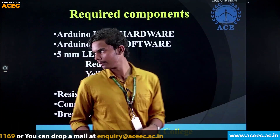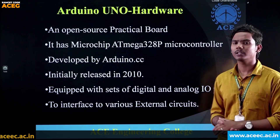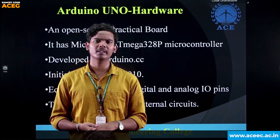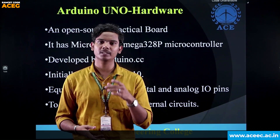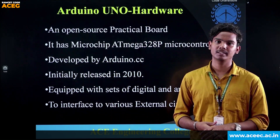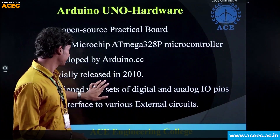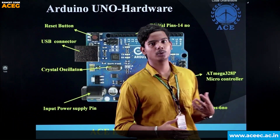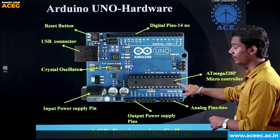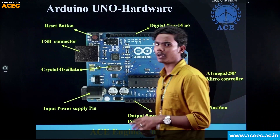Now let's learn about the Arduino Uno hardware. The Arduino Uno hardware is an open-source practical board. It consists of an ATmega328p microcontroller, which is the heart of the Arduino Uno board, released in 2010 by Arduino CC. It also has digital and analog I/O pins. The ATmega328p microcontroller is one of the major components on the board.